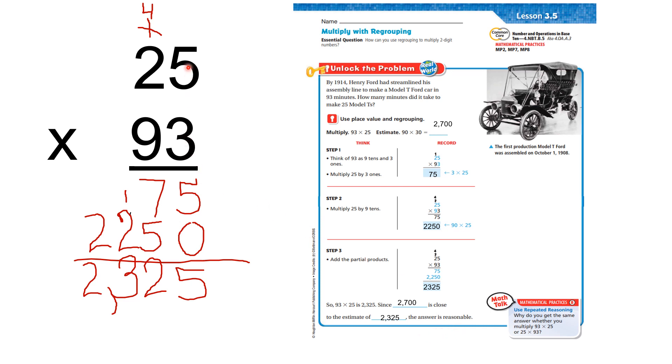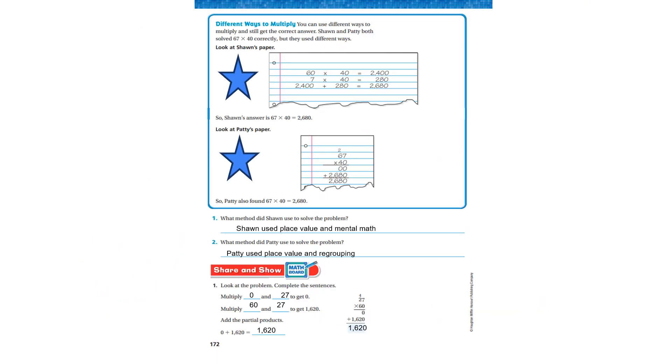Let's look at how I did this again. 3 times 5 is 15, carry the 1. 3 times 2 is 6, plus 1 is 7. I put my 0 in for my placeholder, because I'm now multiplying by 10s. 9 times 5 is 45. Carry the 4. 9 times 2 is 18, plus 4 is 22. I add it all up. I get 2,325.